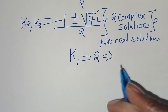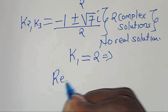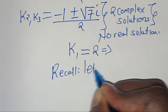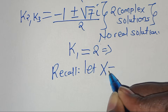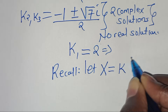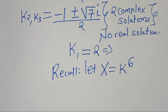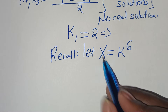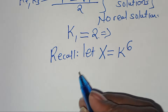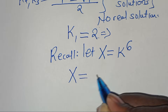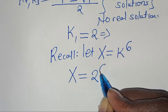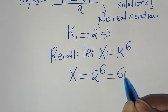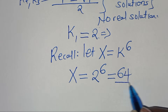Recall that we let x equal to k to the power of 6. So we can solve for the value of x by substituting the value of k1, so that x equals 2 to the power of 6. And 2 to the power of 6 equals 64. So x equals 64 is the value of x.